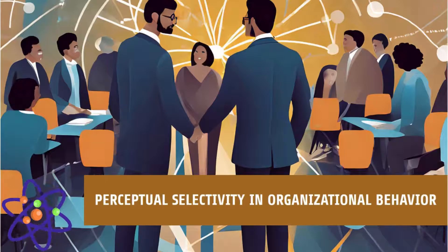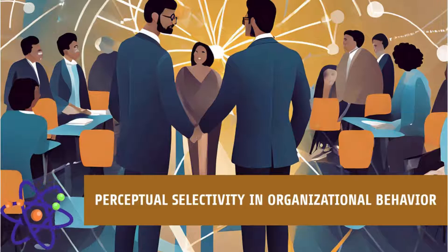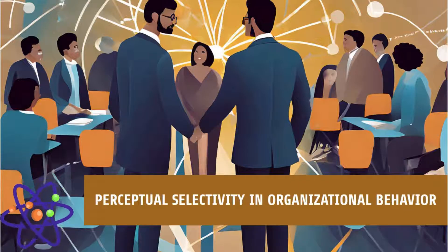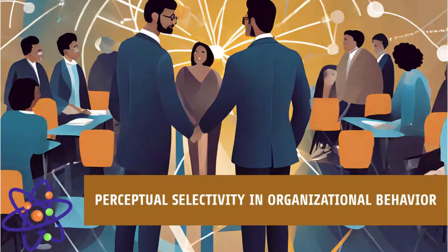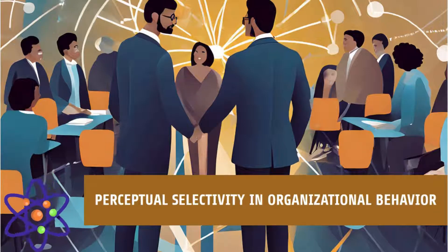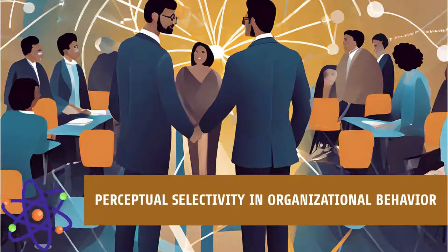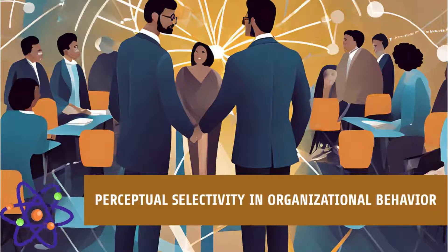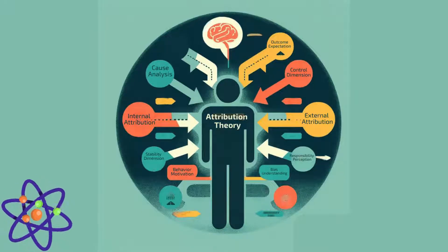A noisy, chaotic environment might lead to different perceptions than a quiet, organized one. Perceptual selectivity refers to the process by which individuals filter out unnecessary information and focus on what is relevant. This selectivity is crucial in managing the vast amount of information we are exposed to daily. It can be guided by external factors like the intensity, size, and contrast of the stimulus, or internal factors such as a person's motives, past experiences, and current psychological state. For example, an employee highly motivated by career advancement may pay more attention to feedback and development opportunities.